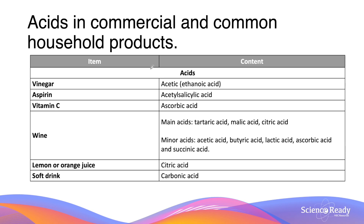Here's a list of acids in commercial and common household products. Vinegar contains acetic acid. Aspirin contains acetylsalicylic acid. Vitamin C is ascorbic acid. Wine contains tartaric acid, malic acid, and citric acid — since wine comes from grapes, we expect there to be citric acid. Some of the minor acids in wine include acetic acid, butyric acid, lactic acid, ascorbic acid, and succinic acid.